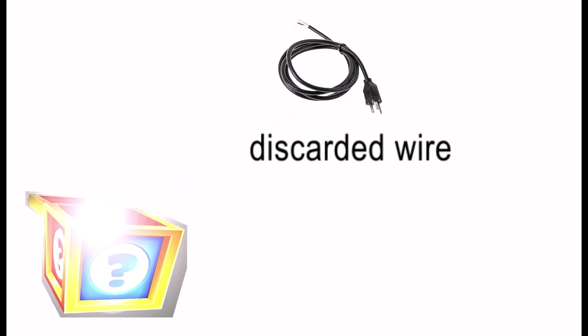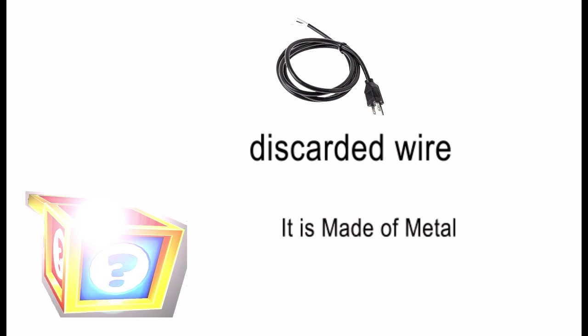The next item is discarded wire. What can be found inside the discarded wire that can be sold to junk shop? Of course, it's the copper wire. And copper wire is made of metal.